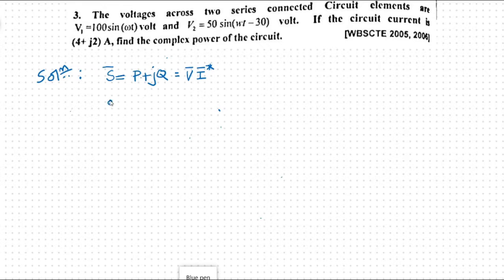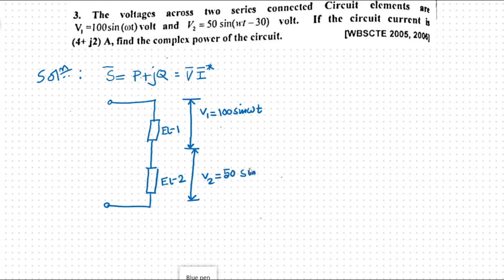Now as per the problem, first what we have to do, we have to draw a circuit diagram schematically representing the circuit condition. So, this is our element one, this is our element 2. It is given that voltage across element 1 is V1 equal to 100 sin omega t and V2 is equal to 50 sin omega t minus 30. This is basically 30 degree.